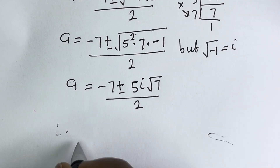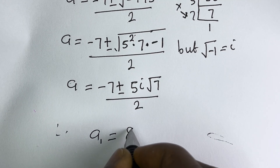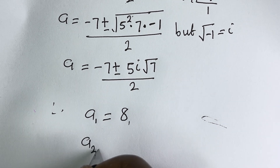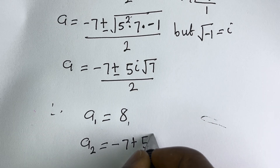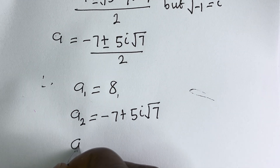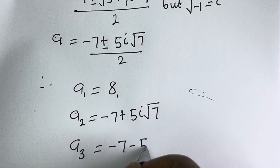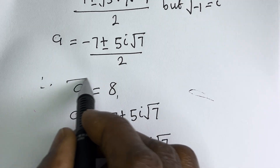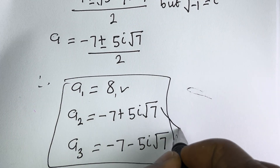Therefore, our final answers are: A₁ equals 8, A₂ equals (minus 7 plus 5i√7) over 2, and A₃ equals (minus 7 minus 5i√7) over 2. We have one real root and two complex roots.